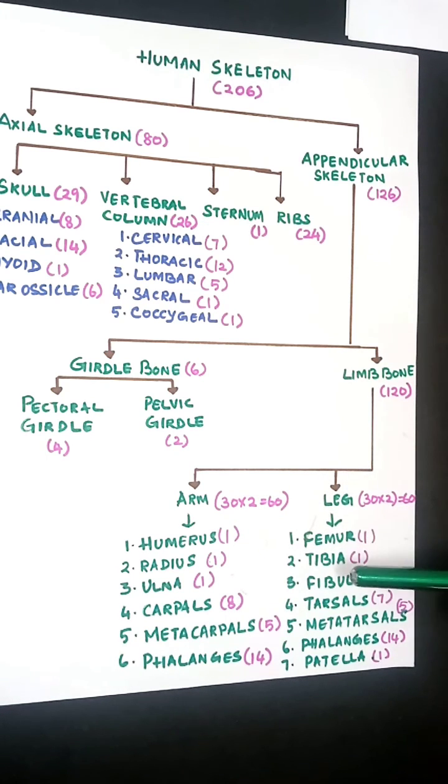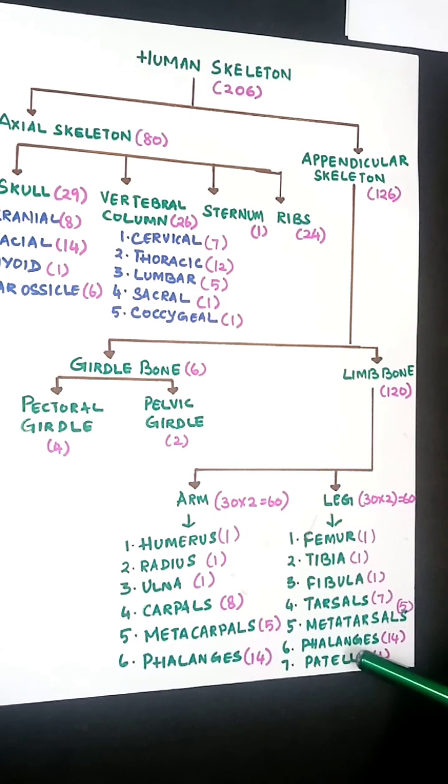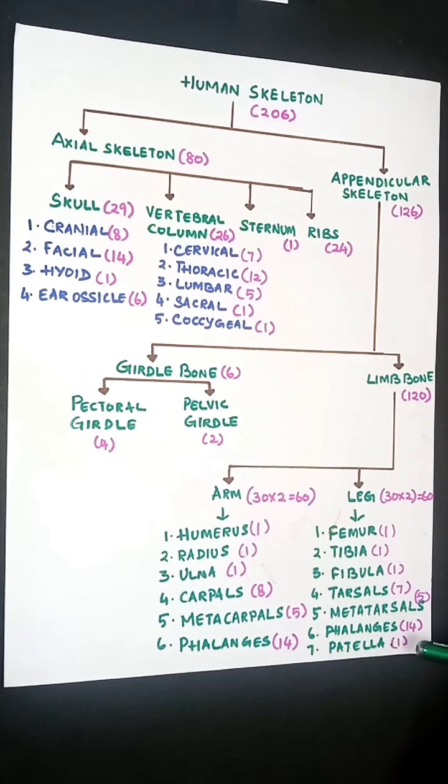Under leg bones, you have femur 1, tibia 1, fibula 1, tarsus 7, metatarsus 5, phalanges 14, and patella 1. Same way multiplied by 2.